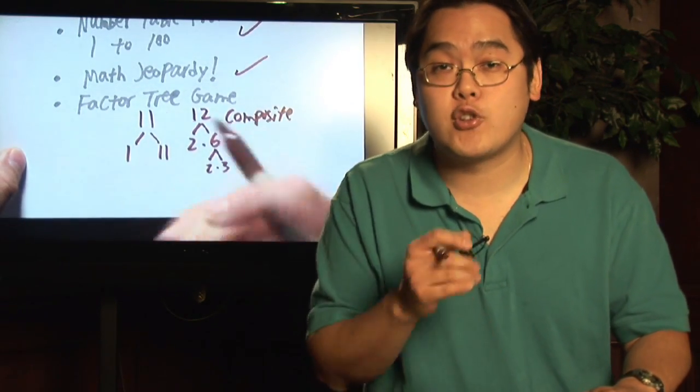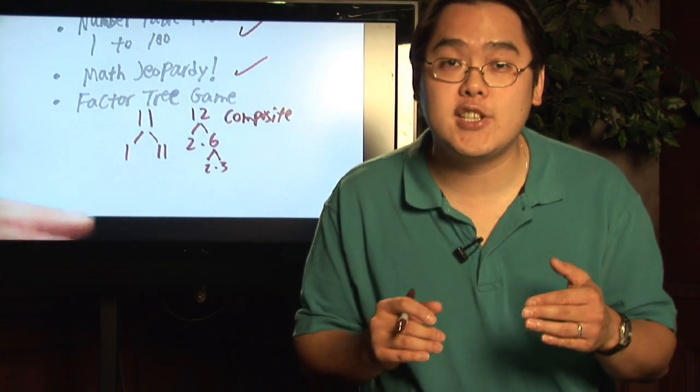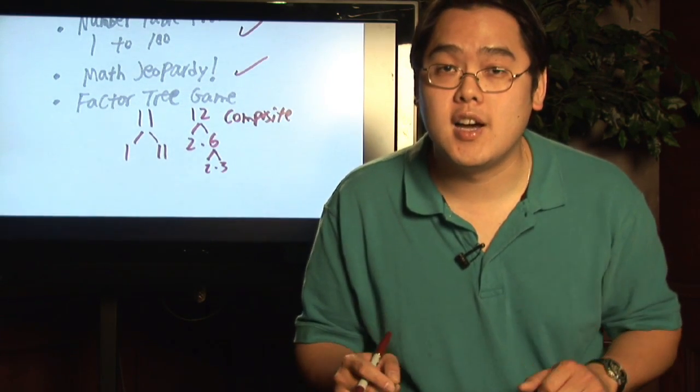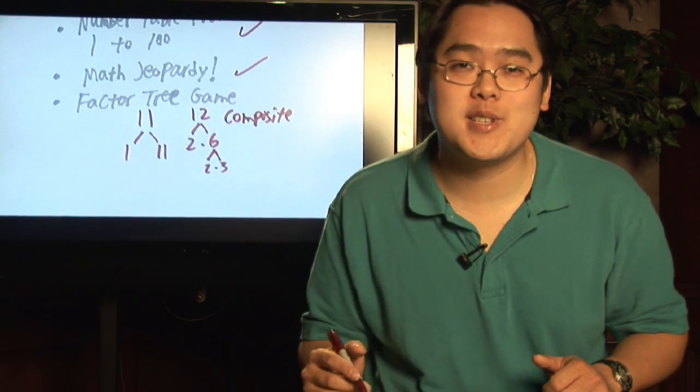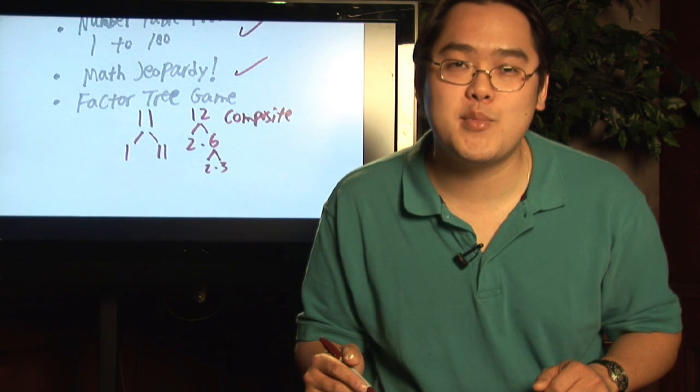You can do a factor tree with any number, and as long as it ends at only 2 branches, it's a prime number. Otherwise, it's a composite number. I'm Jimmy Chang, and those are some examples of prime and composite number activities.